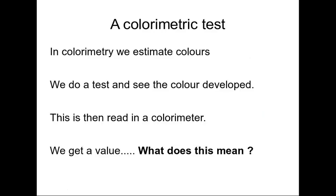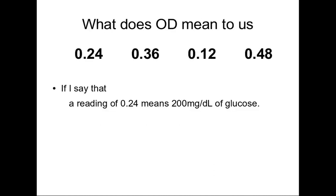In a colorimetric test, we estimate colors. We do a test, see that a color has developed, take this solution into a colorimeter, and get a reading. The instrument gives us a value which we call optical density. When you put a test tube in a colorimeter, you get readings like 0.24, 0.36, 0.12, 0.48. These values don't mean anything on their own and don't help us manage the patient.